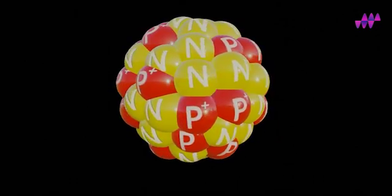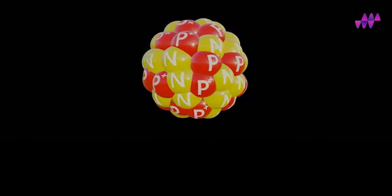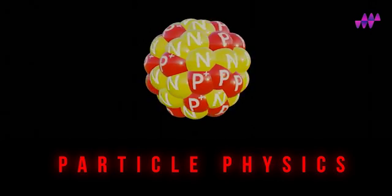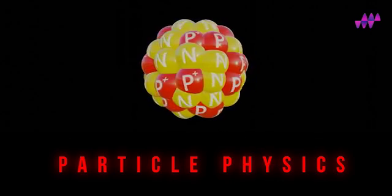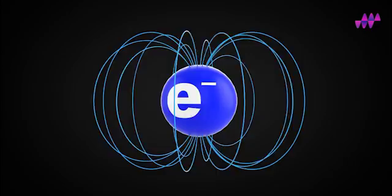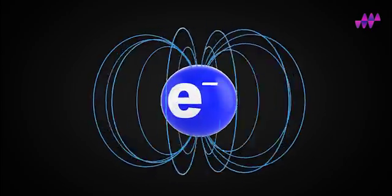The movement of protons and neutrons is classified under particle physics, and that topic shall be introduced in the upcoming series. But the element that we care about now is the electron and its mobility.